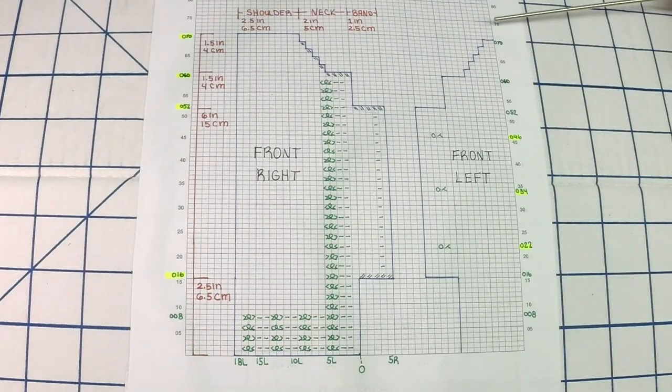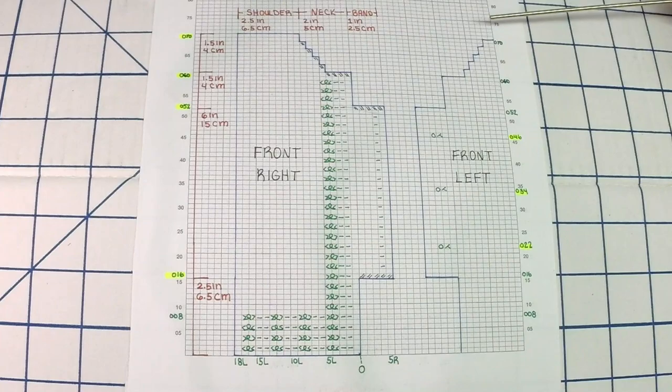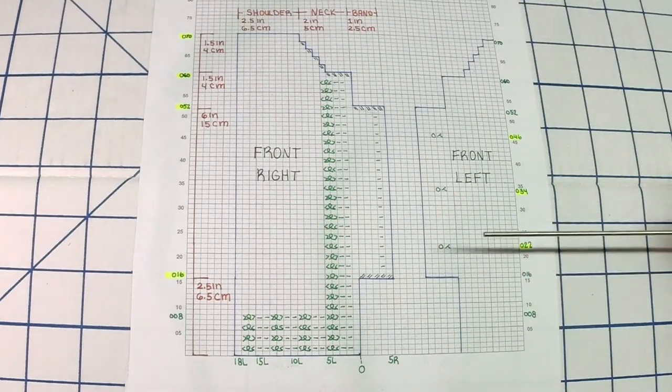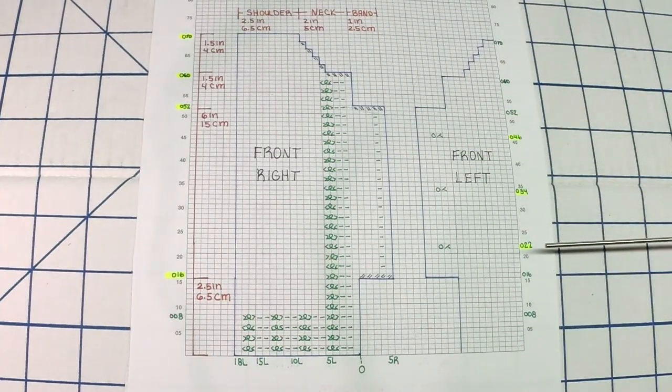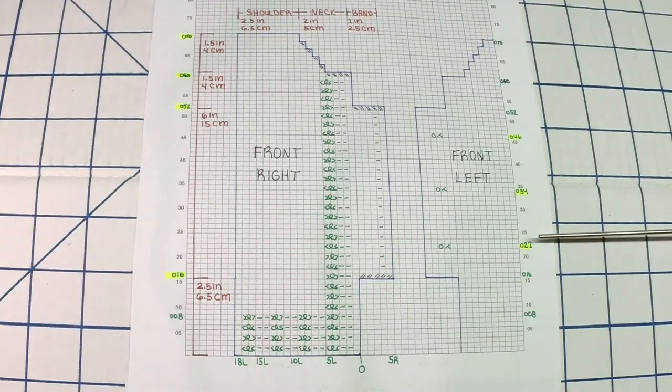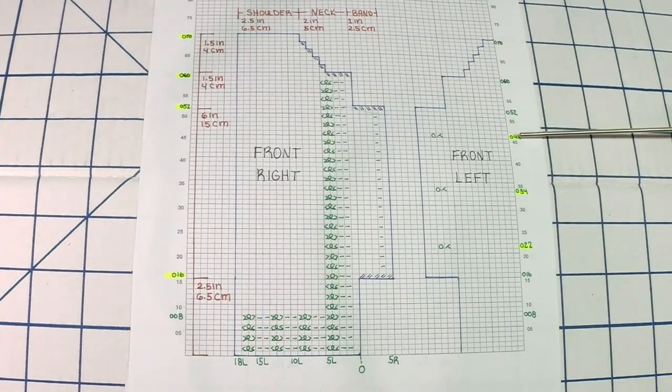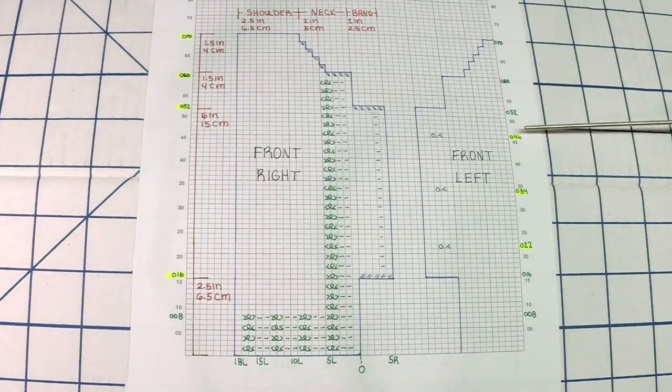The same principle applies for the left of the cardigan. The only difference is you're working in mirror image and we also have to create the buttonholes, so on row counter 22, 34 and 46 you will create some eyelets.